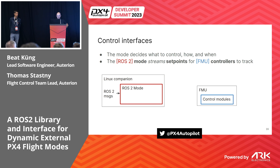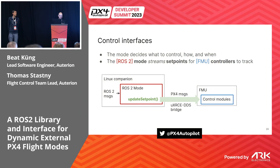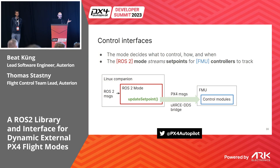Practically, what this implementation does is have ROS2 modes that stream setpoints to FMU controllers. This runs on a Linux companion computer communicating with the FMU via the DDS bridge — specifically using PX4 messages from the px4_msgs repo, which converts to ROS2 messages and UORB topics. This means the mode is speaking the language of the internal PX4 pub/sub messaging system.